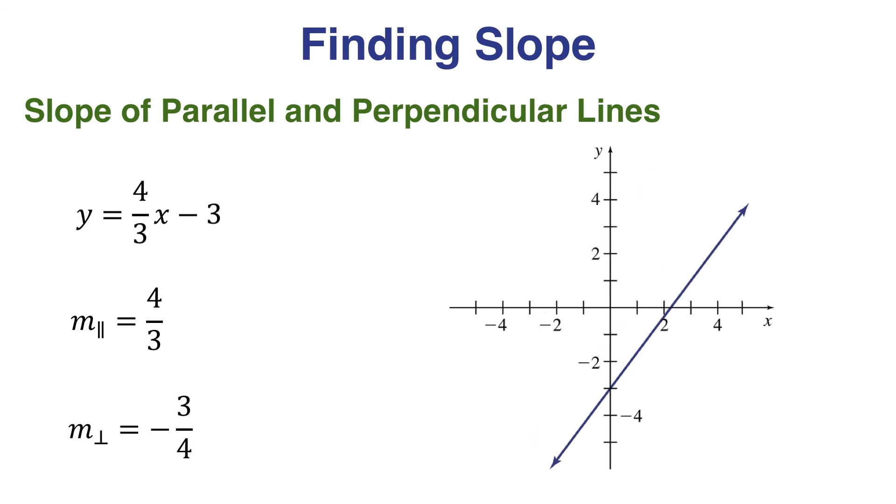Now let's take a look at some perpendicular lines. Perpendicular lines have slope negative 3 fourths. Here are a few examples of perpendicular lines. Notice, the lines intersect the original line at a right angle.